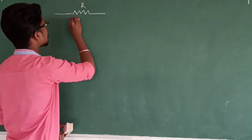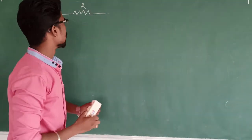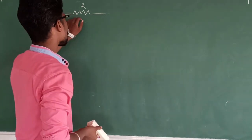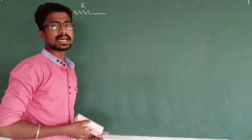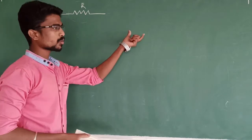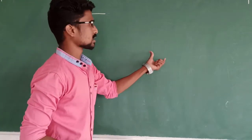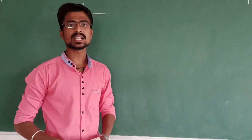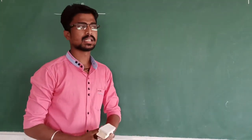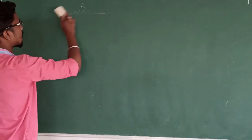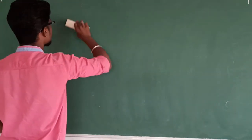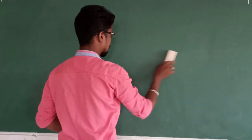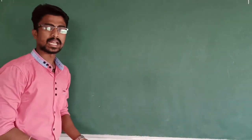A resistor is a component of known resistance, or we can call it a circuit element which opposes the flow of current. Every resistor has its own resistance value. So how do we find out the resistance value using color codes?